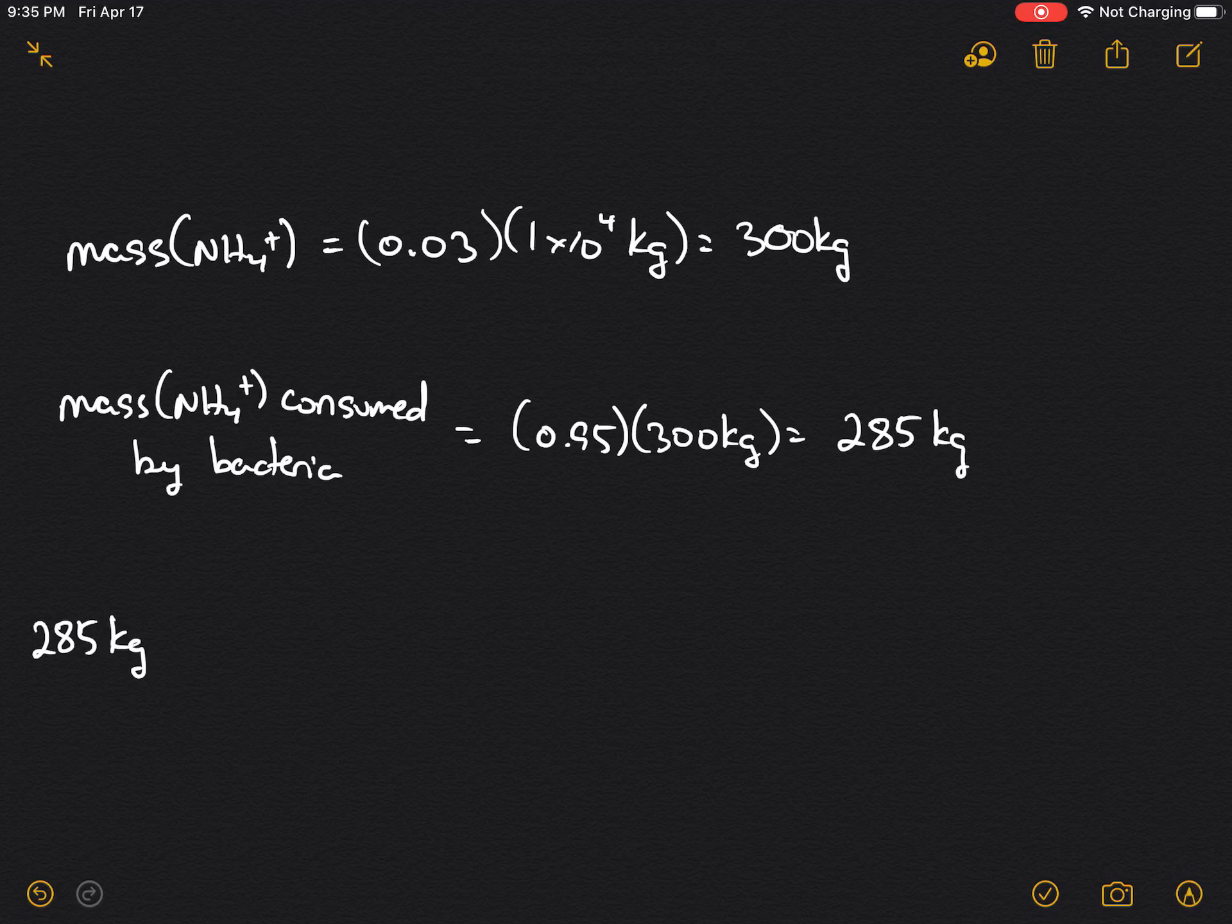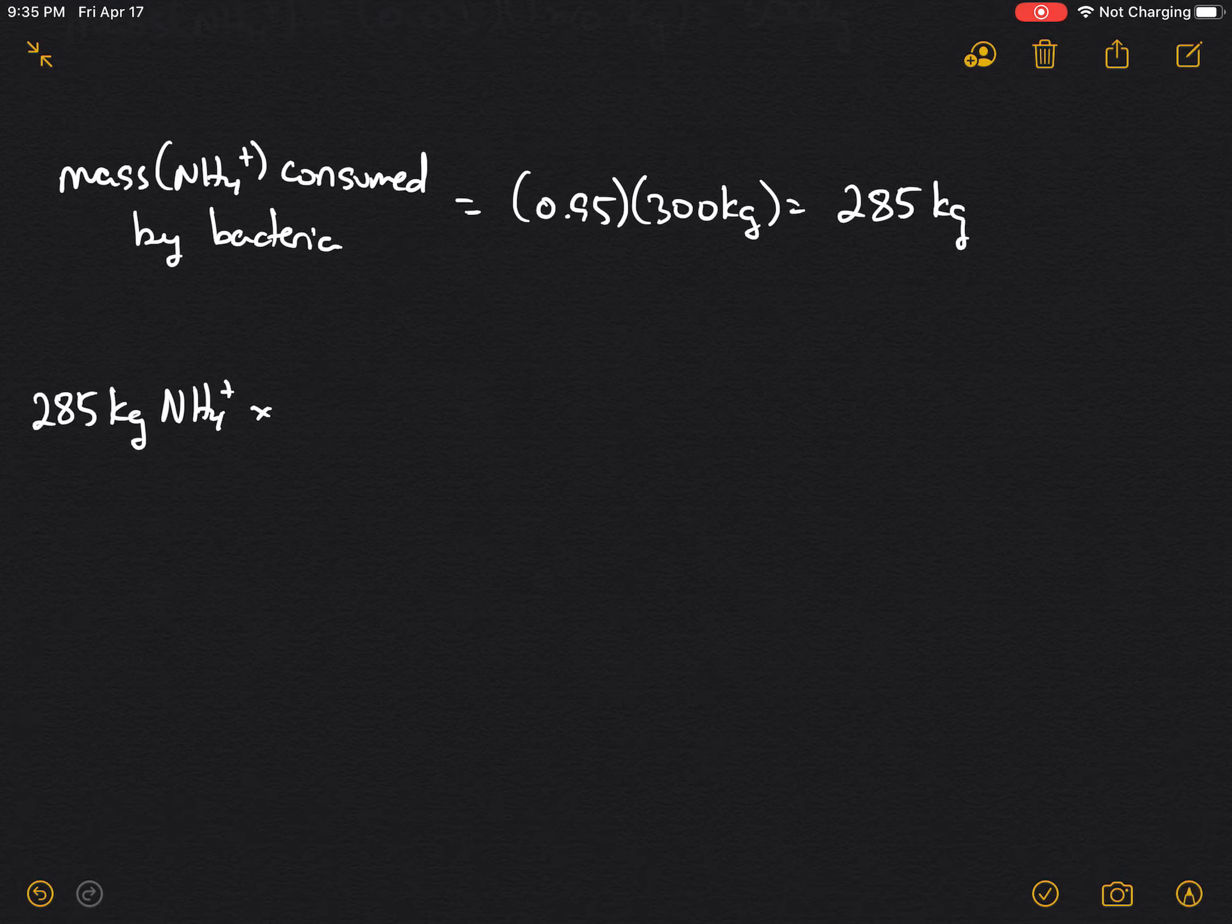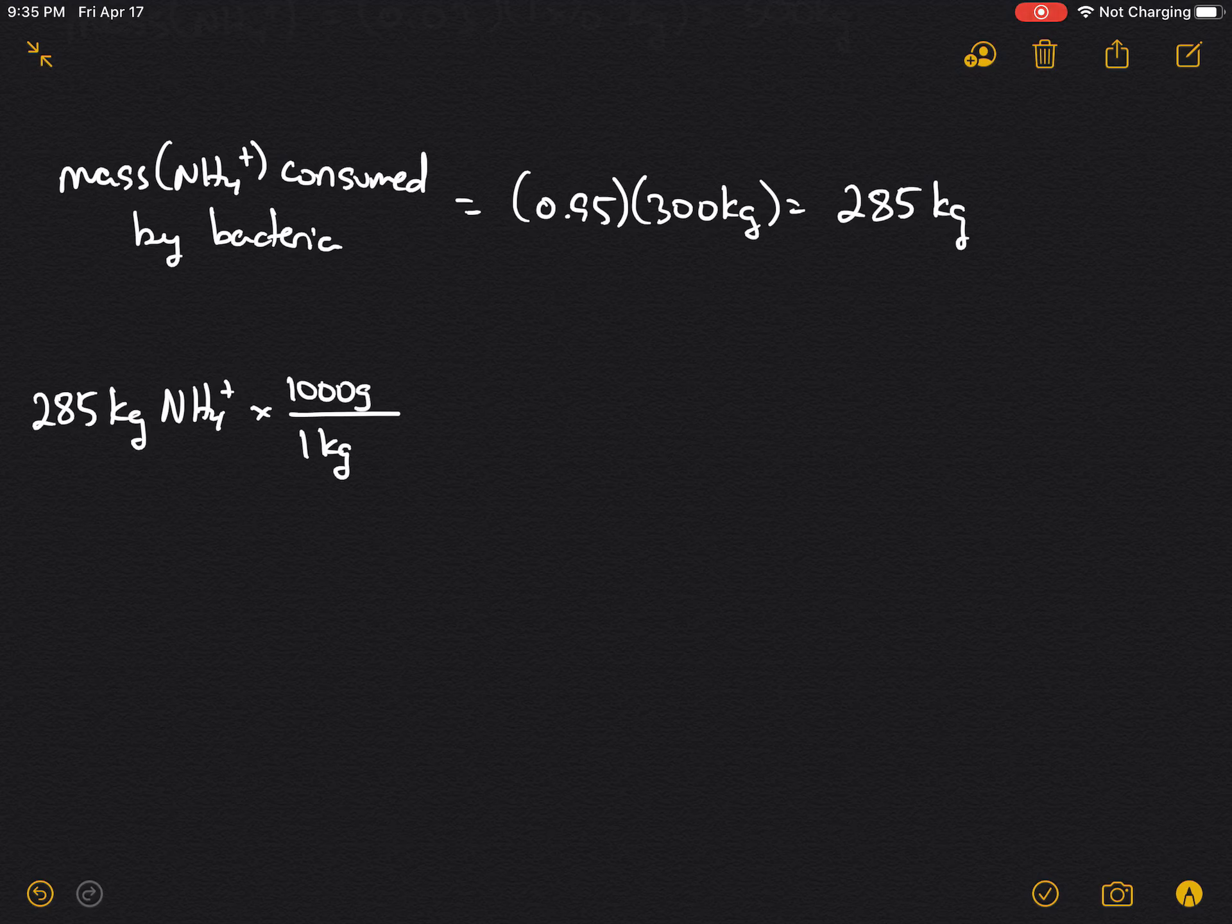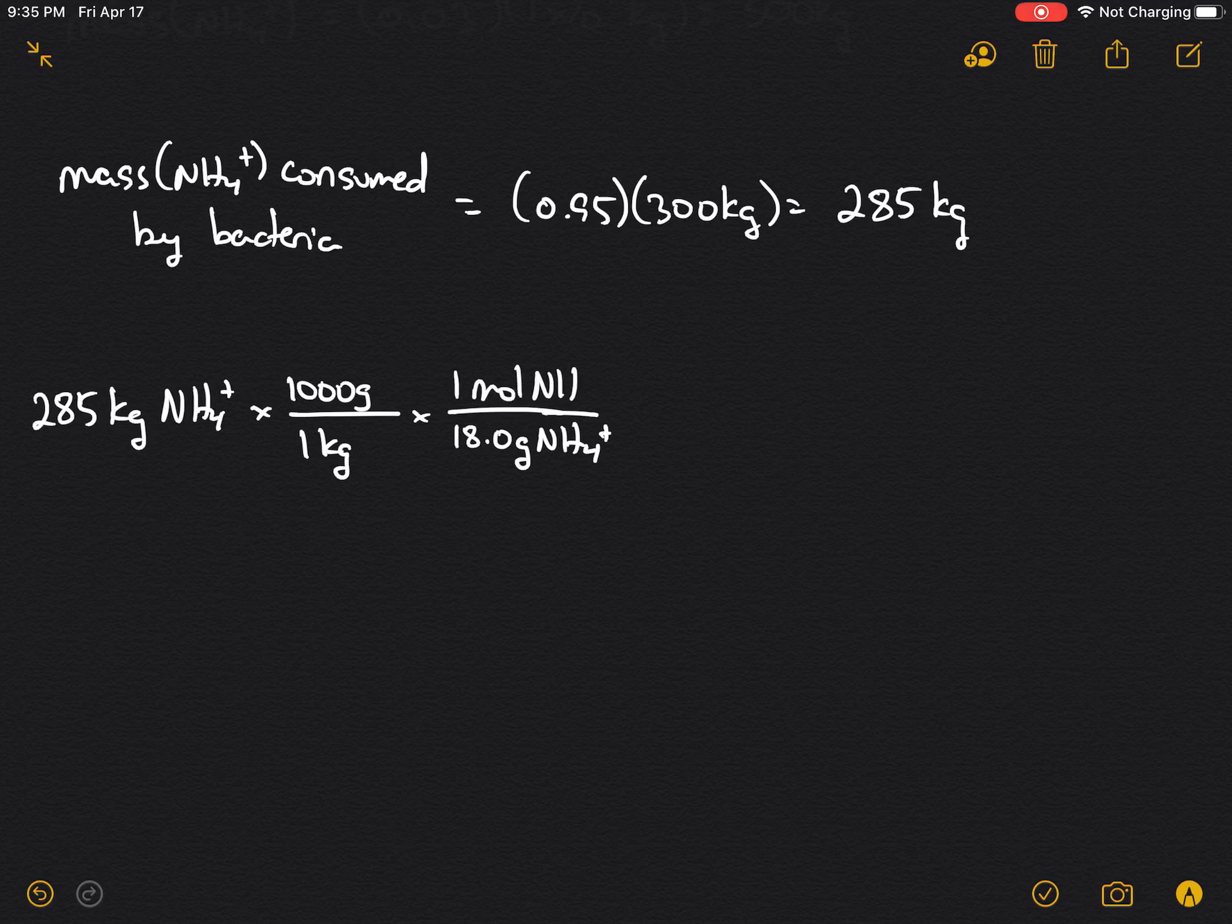From our stoichiometry now, we start from 285 kilograms of NH4+, and we convert that into grams. In one kilogram, we have 1,000 grams. We'll convert to moles, and NH4+ is 18.0 grams per mole.